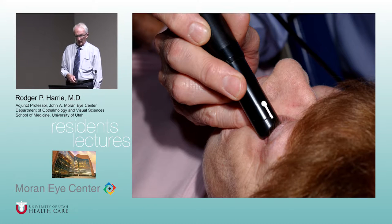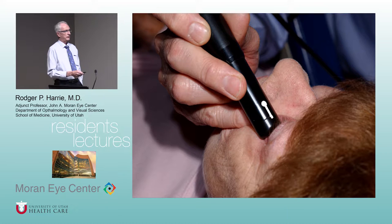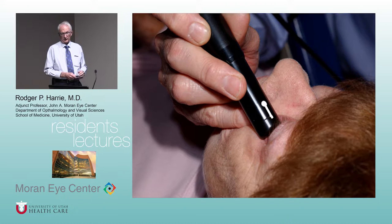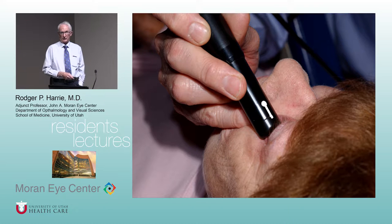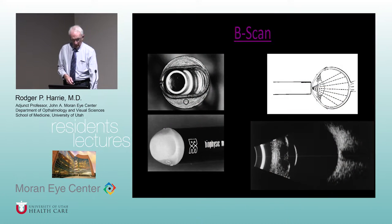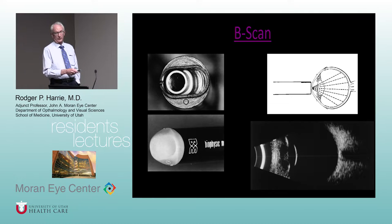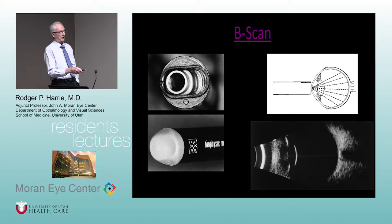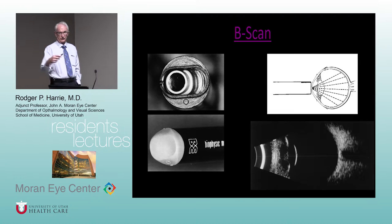The B-scan probe has a marker on it, which tells you which way the transducer oscillates — it oscillates in one plane, and where you point the marker tells you the scanning direction, which is important for localization. If you remove the tip, you can see the transducer going back and forth about 15 to 20 times per second, scanning the eye. Each scan covers about 60 degrees of the inside surface of the eye, so you can examine the entire eye in about six different sections.